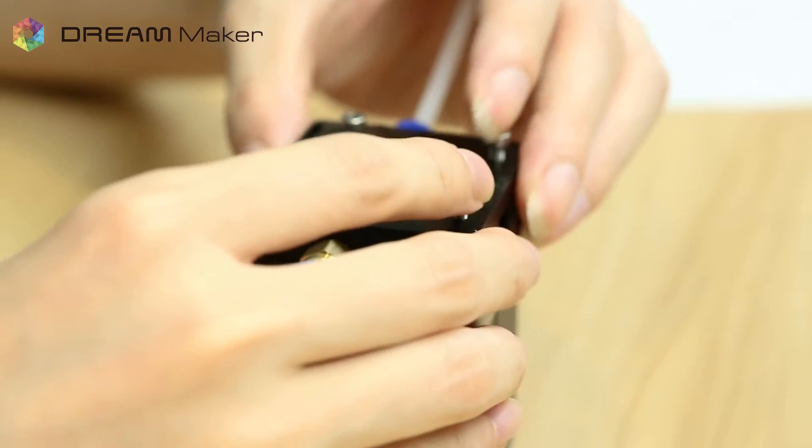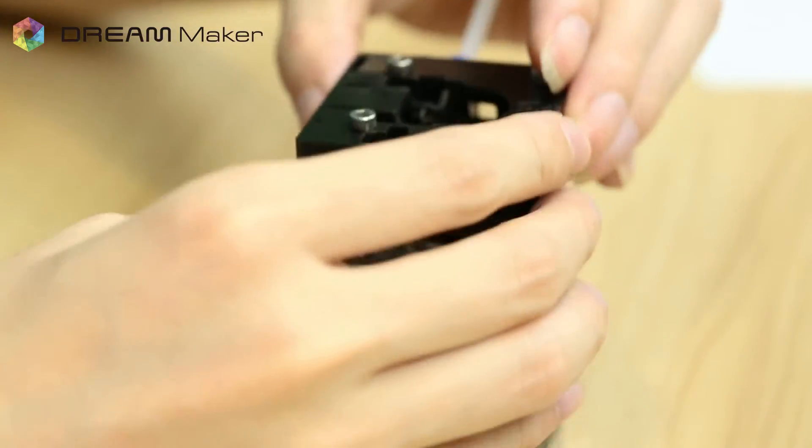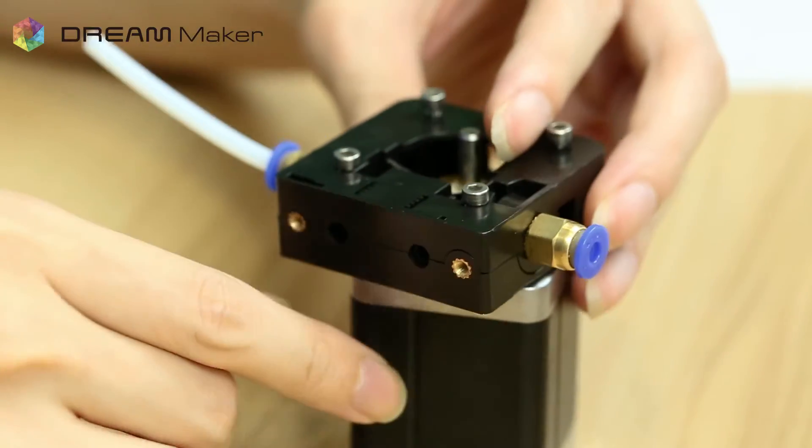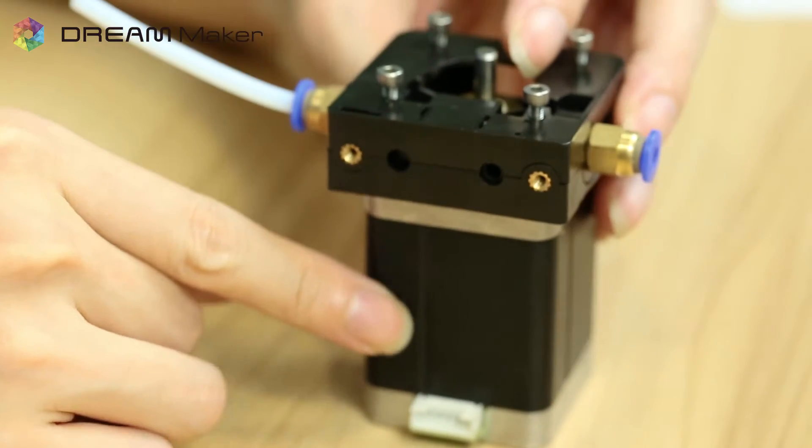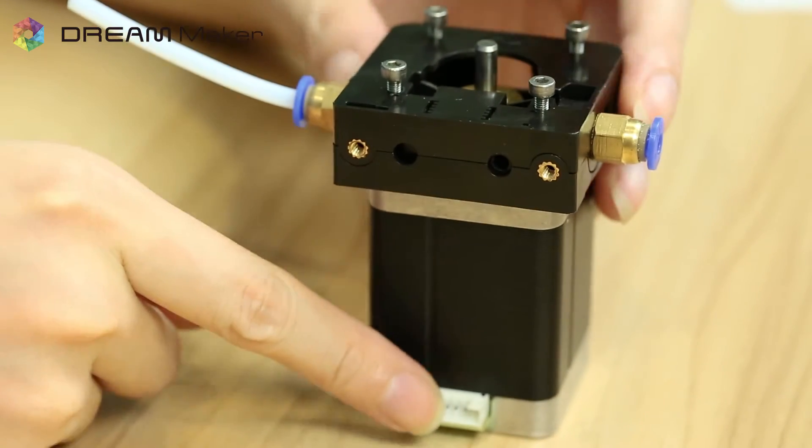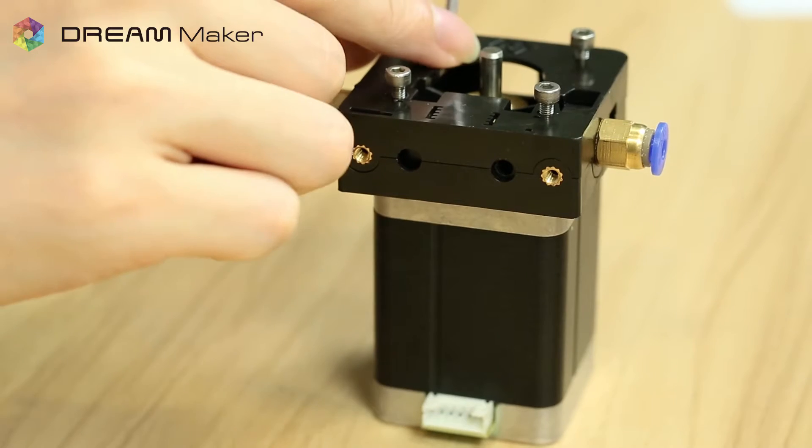And then put the extruder onto the stepper holder. Always make sure the bearing side is on the same side of the connector. Then secure the four screws at the corner.